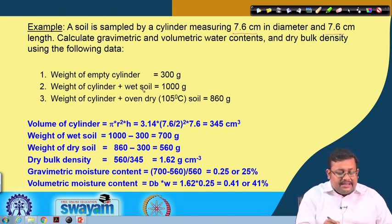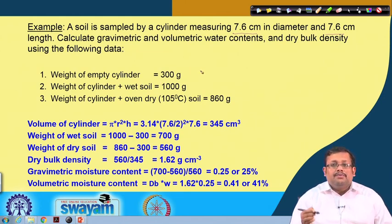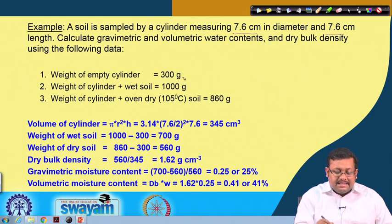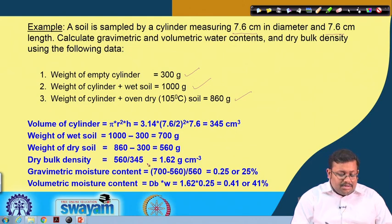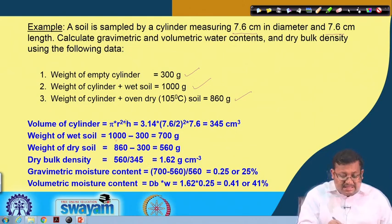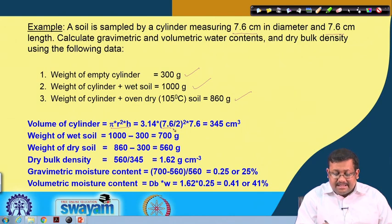The given data: weight of the empty cylinder is 300 grams, weight of cylinder plus wet soil is 1000 grams, and weight of cylinder plus oven-dry soil after drying at 105 degrees centigrade is 860 grams. The volume of the cylinder is calculated by pi r squared times length, giving 345 cubic centimeters.